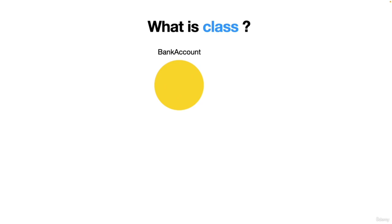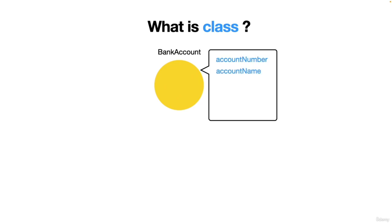They've decided to create a bank account class. It should have an account number, an account name, a balance, and two facilities called debit and credit. So bank account here is a class. It consists of three properties — account number, account name, and account balance — and two functions: debit and credit. This skeleton has been created.